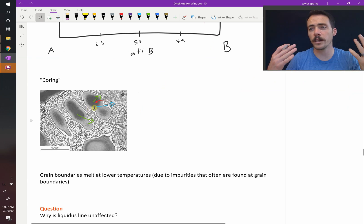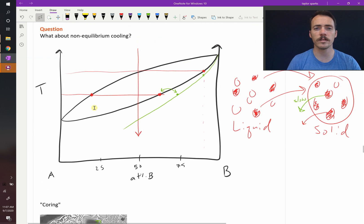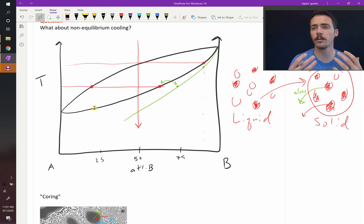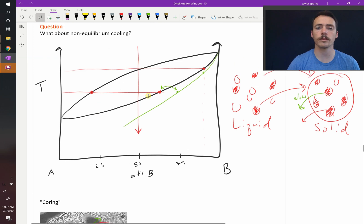And that can be good or bad. You can use that to your advantage—it's an engineering tool. So instead of letting this thing sit really slowly while you cool it down, if you cool it down a little bit more quickly, you will end up with these non-equilibrium coring microstructures.